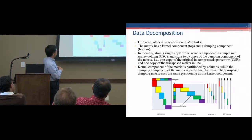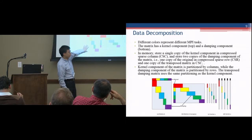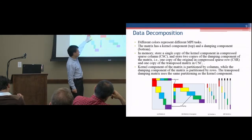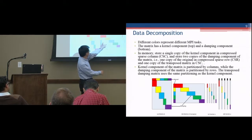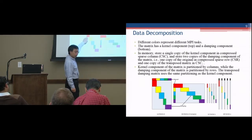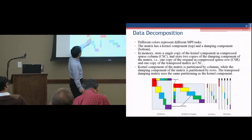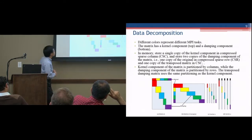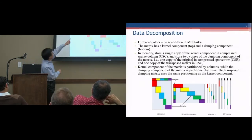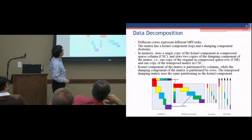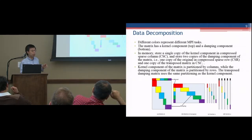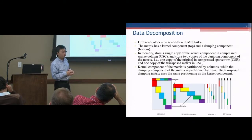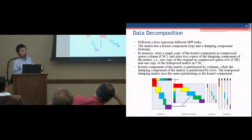For the data decomposition, we have the original matrix A, divide it into the kernel and the damping part, divided by rho, and that's also the matrix A transpose. The transpose of the red part will be on the same compute node — if they have the same color, they are on the same compute node. We store a single copy of the kernel in CSC format, and store two copies of the damping component: one copy in CSR format and the other one in CSC format. CSC and CSR are very popular formats to store sparse matrices.